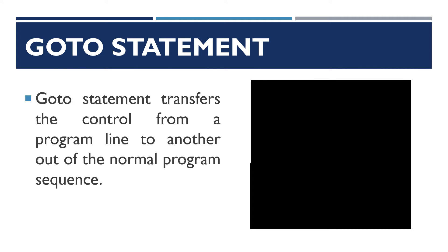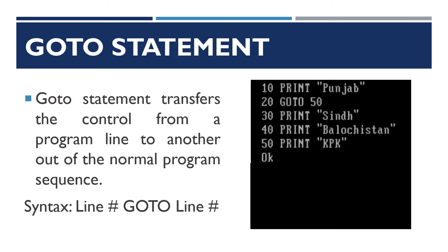The GOTO statement is used to implement unconditional transfer of control. It transfers the control from one program line to another out of the normal program sequence. The syntax is: line number GOTO line number. For example, in a program where line 10 has PRINT "Punjab" and line 20 has GOTO 50, the control switches from line 20 to line 50, skipping lines 30 and 40. The output will print "Punjab" and then what is written in line 50, which is "KPK".